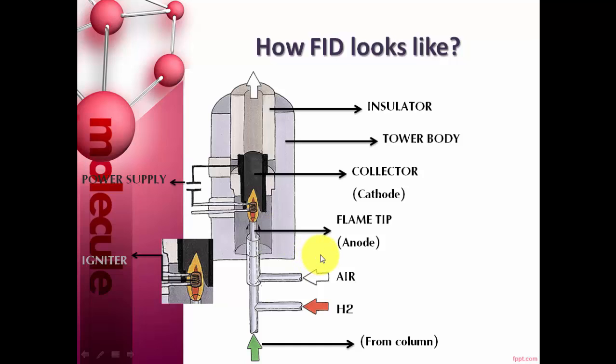By burning the gas output from the column, the burning carbon particles will emit electrons. These electrons change the current values, which are measured by the electrodes. This change is then transmitted and displayed as a chromatograph.